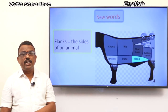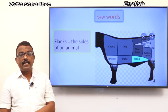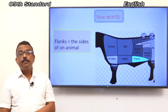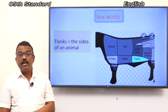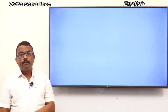See the picture. Flank — where is the flank? The green part of the bullock — the sides of the bullock. It is an animal's flanks.